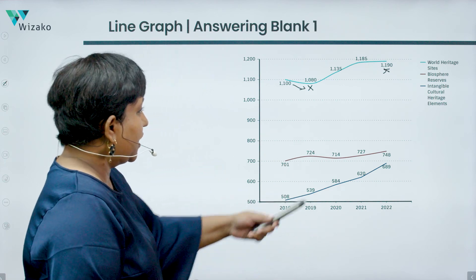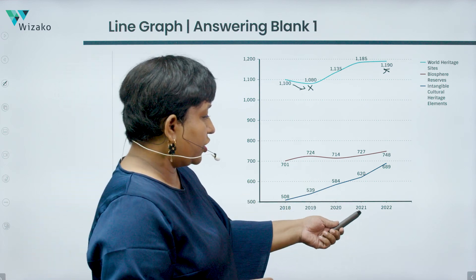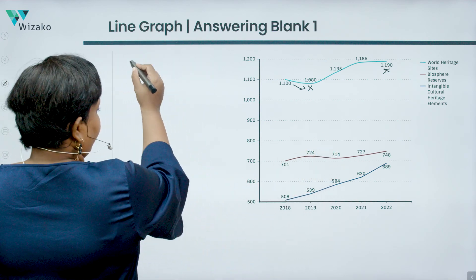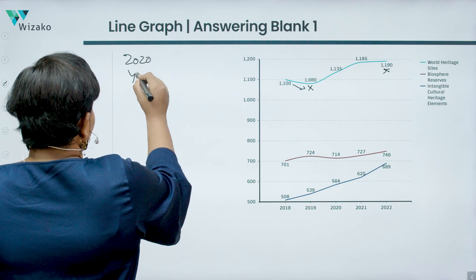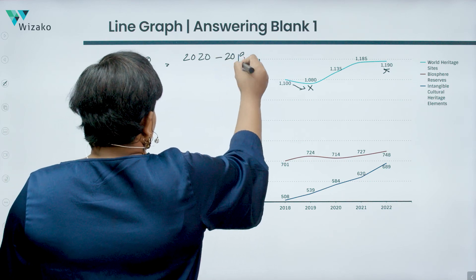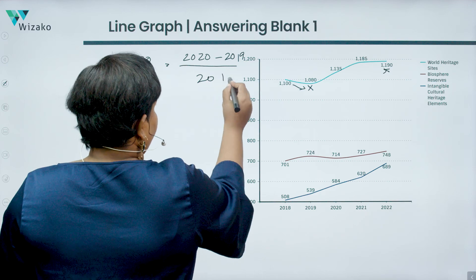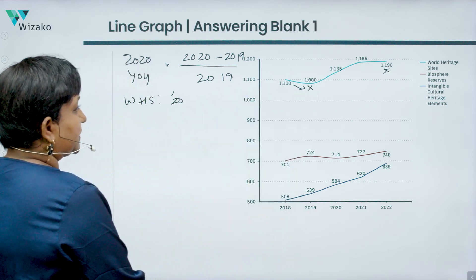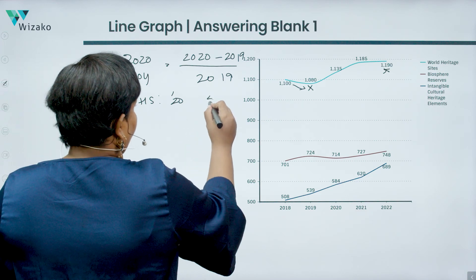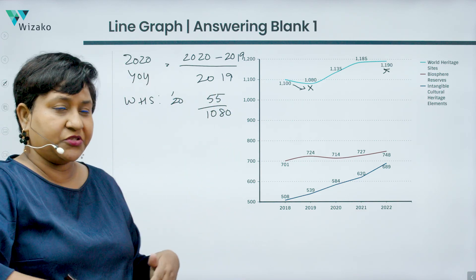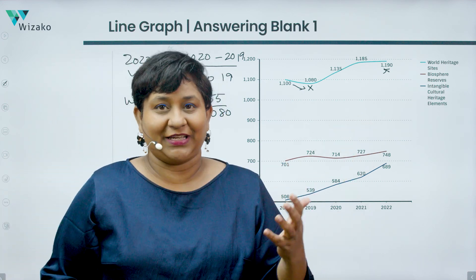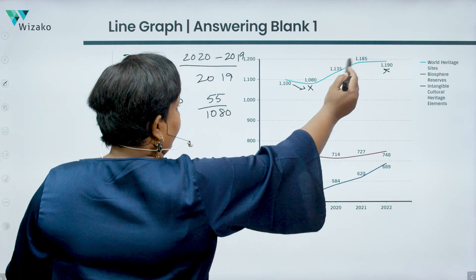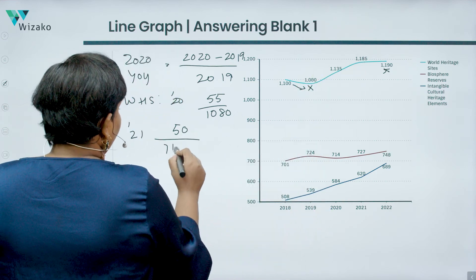For year-on-year percentage growth, the formula is: (current year minus previous year) divided by the previous year. For 2020, world heritage sites grew from 1080 to 1135, so that's a 55-point growth on a base of 1080. For 2021, it went from 1135 to 1185, a 50-point growth on a base of 1135.